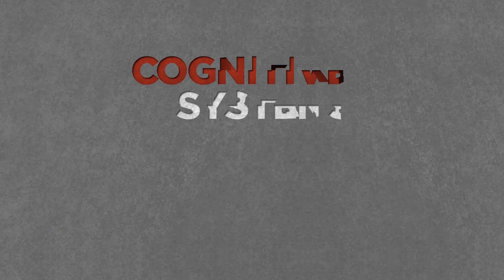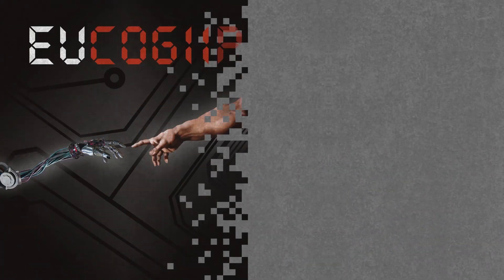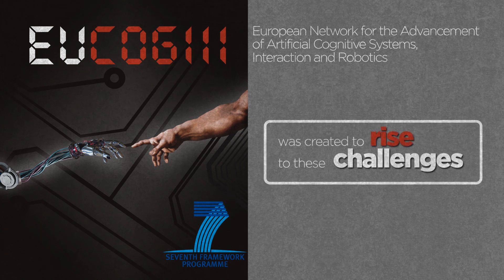Cognitive systems are the only systems that will actually work. The EU COG3 network is an FP7-funded project that was created to rise to these challenges.